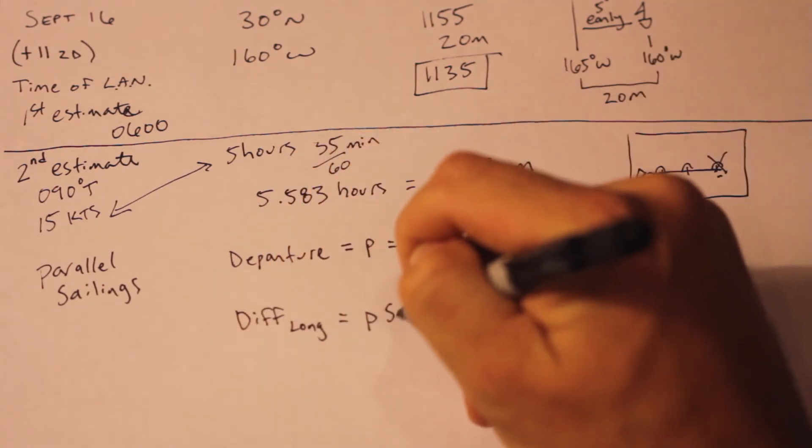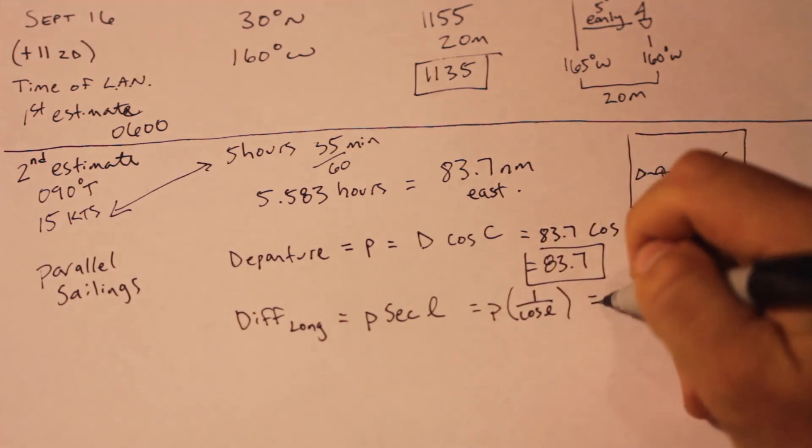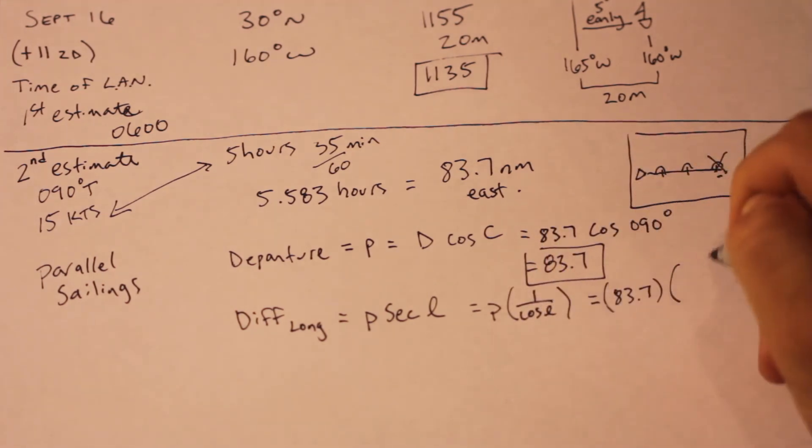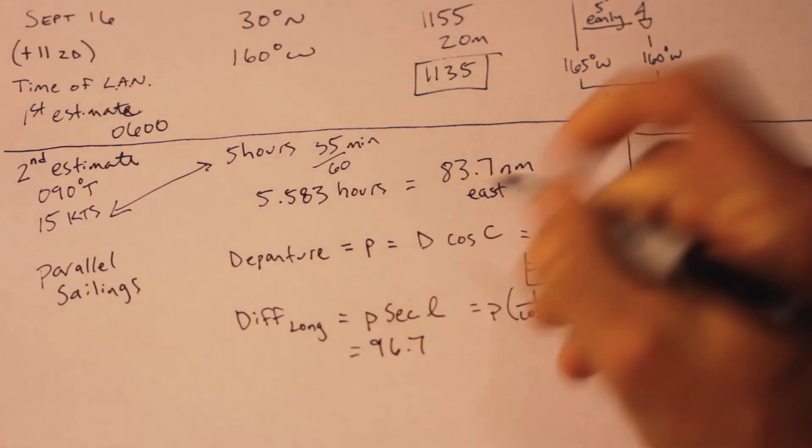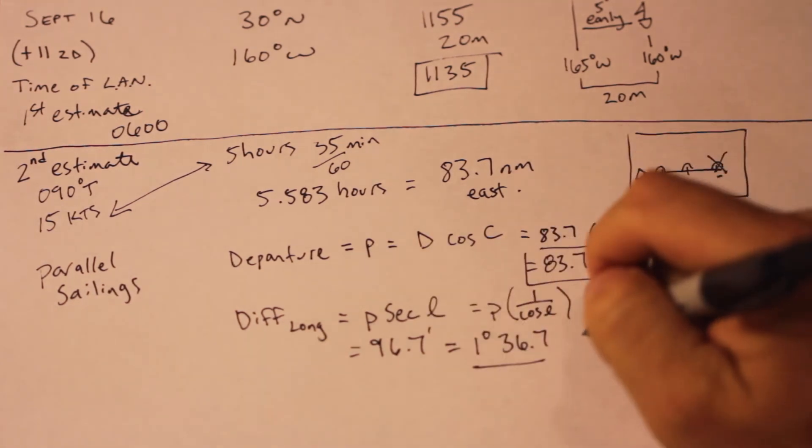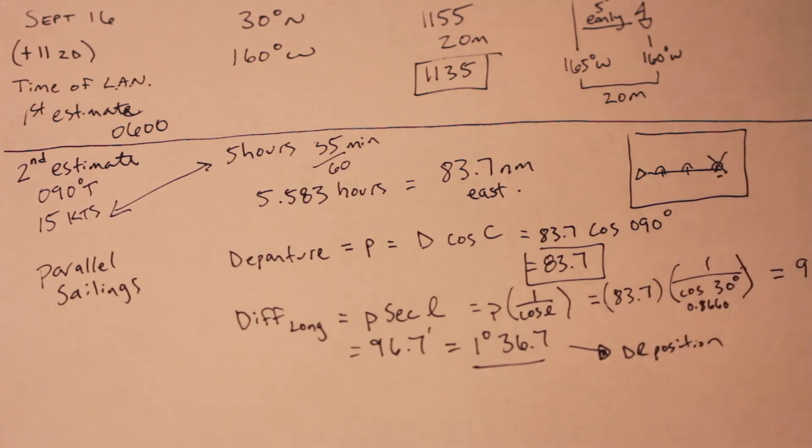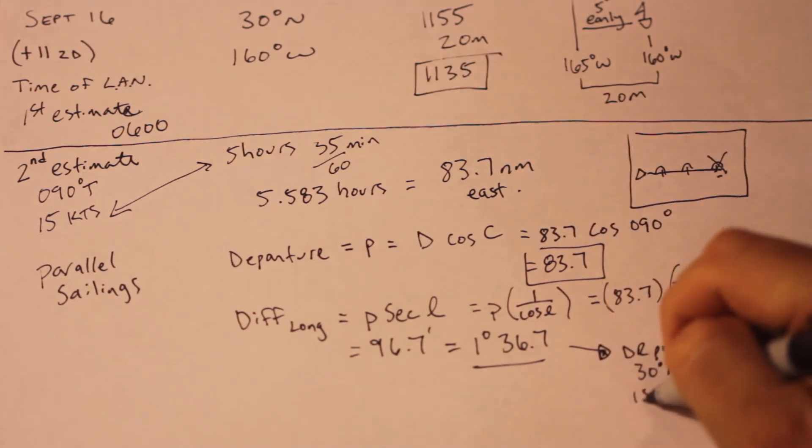What we really want is the difference in longitude for 83.7 miles at latitude 30 degrees north. That formula is called difference in longitude, or DLO, and it equals P secant latitude. Recalling our grade school trigonometry, which I'm sure everyone remembers, that equals P times 1 over the cosine of latitude. The cosine of 30 is decimal 8660, so the difference in longitude is 96.7 minutes of arc, or 1 degree in 36.7 minutes. So if you're at a latitude of 30 degrees, and you travel 83.7 miles of distance, that equals 1 degree in 36.7 minutes of arc on the earth's surface.